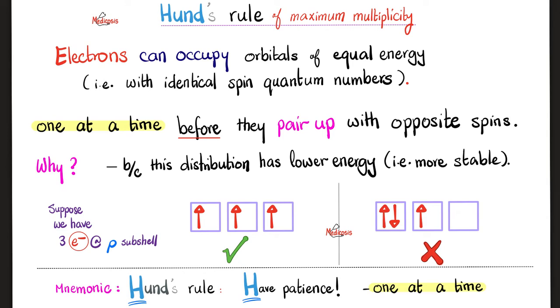Coming up next, Hund's rule of maximum multiplicity. Electrons can occupy orbitals of equal energy, i.e. with identical spin quantum numbers, one at a time before they pair up with opposite spins. Let me translate this nonsense into English. Suppose that you have three electrons and you have three orbitals. Should you go one and then you leave the space empty? Two and then you leave the space empty? Put the third electron here and leave the third space empty? Or should you go one, two and finish this one and then go to the next? The answer is the first one. This is appropriate. This is inappropriate. Thou shall add these electrons one at a time first. Then you pair them up. So I go one, two, three. If you give me a fourth electron, I'll put fourth here. How about a fifth? I'll put it here. Sixth, I put it here. Why? Same thing. This is lower energy, i.e. more stable, i.e. easier to maintain. Mnemonic time. Hund's rule. Be patient. Have patience. Take it easy. One at a time before you pair them up.